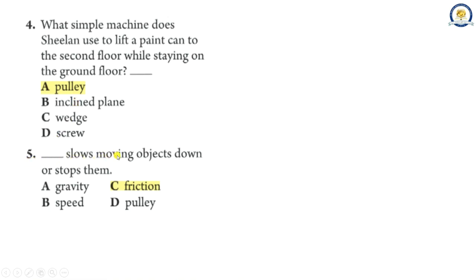5. Slows moving objects down or stops them. A. Gravity B. Speed C. Friction D. Pulley. The correct answer is C, Friction.